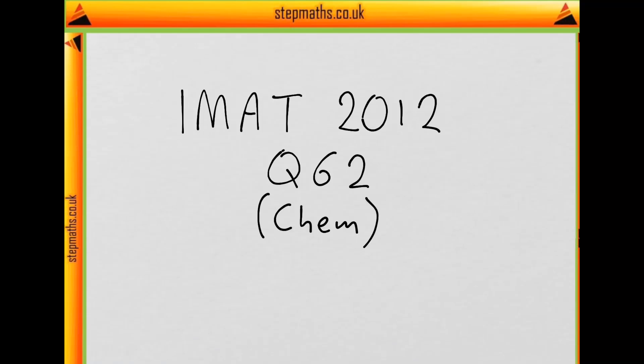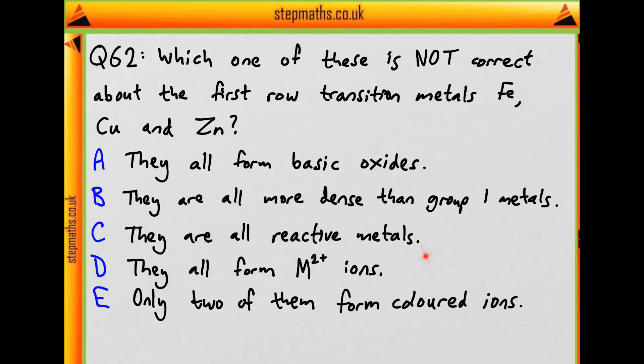This is question 62 on chemistry from the 2012 IMAT. We're asked which one of these statements is not correct about the first row transition metals iron, copper and zinc.